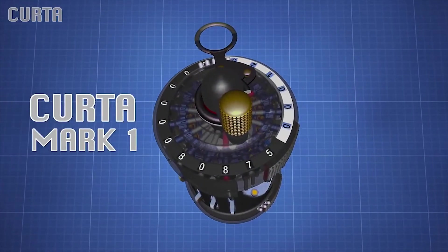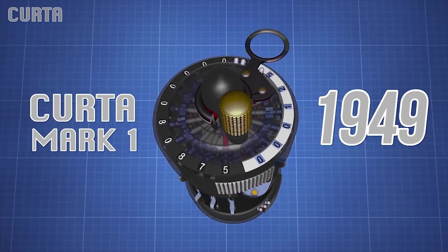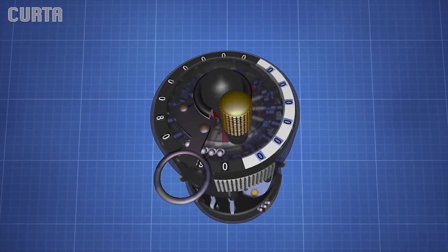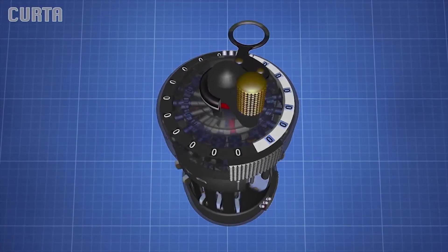The Kurta Mark I was introduced to the market in 1949 for $149 at the time, and it completely blew away the idea of mechanical calculators for nearly everyone in the industry.